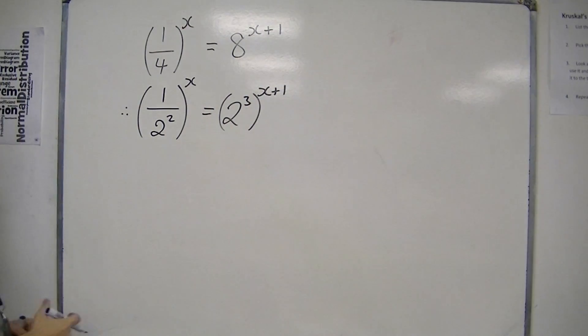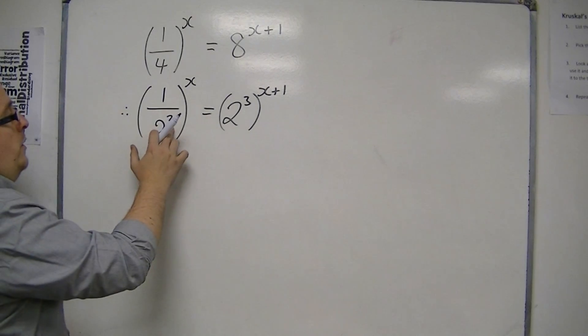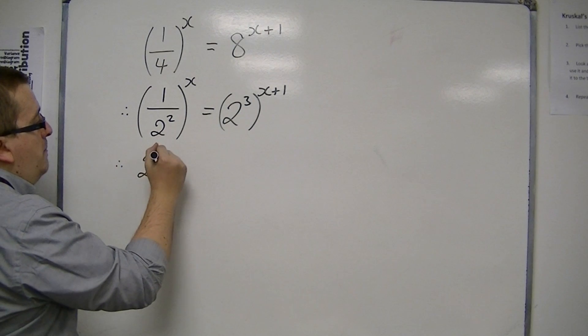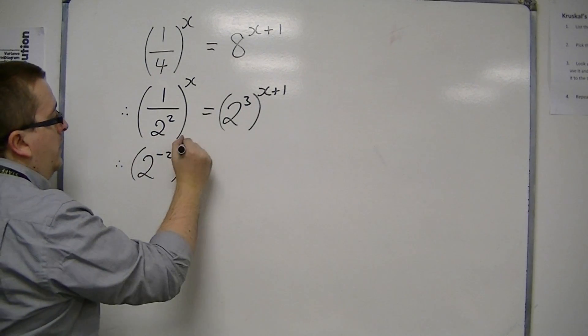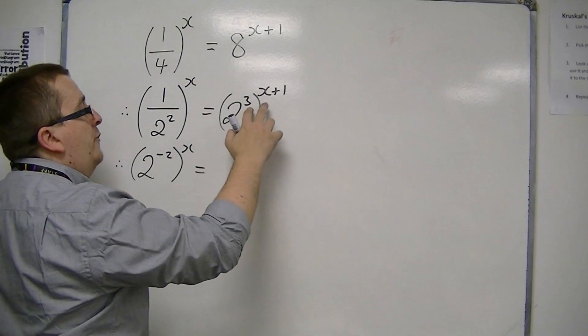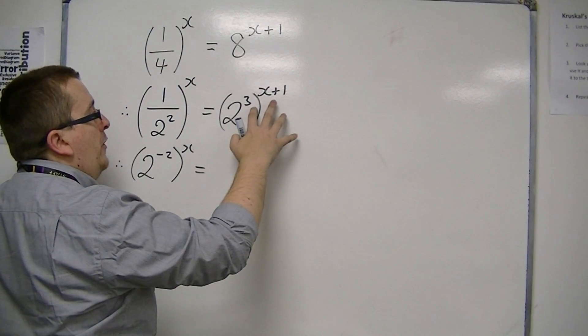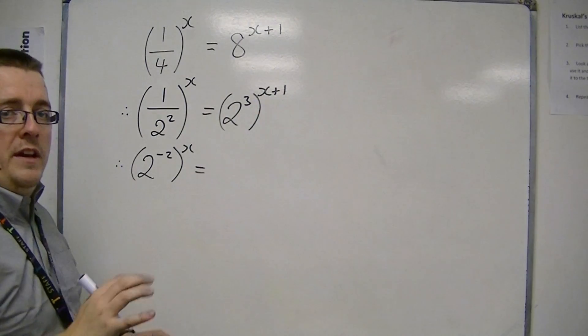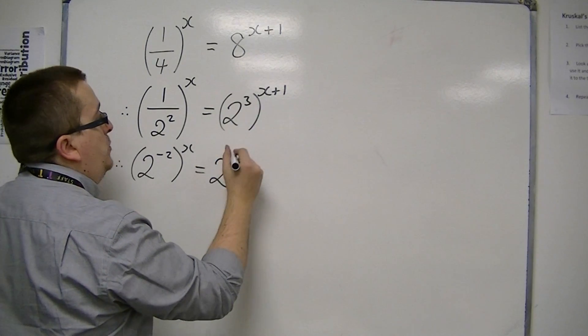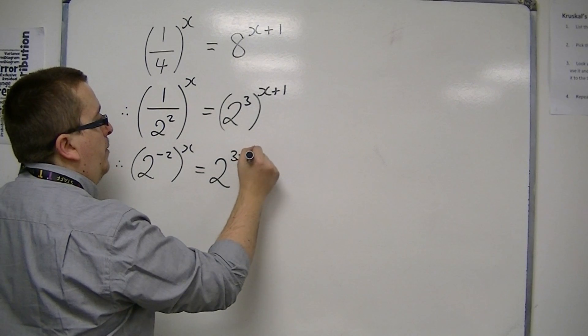OK, now let's see what that gets me. Because now I'm able to write, well, I've got 1 over 2 squared. So that's 2 to the minus 2, still to the power of x. And here I have an x plus 1 on the outside of the bracket and a cubed inside. So I can multiply those indices together. So this is 2 to the 3x plus 3.